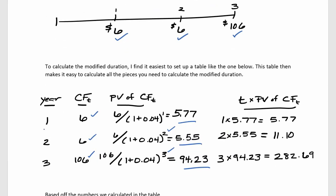For that first cash flow that happens in year one, I multiply the time — which is one year out — times the present value of 5.77, giving 5.77. For the second cash flow, t is two, so I multiply two times 5.55 to get 11.10. For the cash flow received at year three, I do the same and get 282.69.